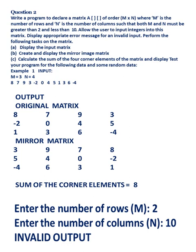Question 2: Declare a matrix of order M by N, where M is the number of rows and N is the number of columns. Fill the matrix with integers, then output the original matrix, the mirror matrix, and the sum of the corner elements.